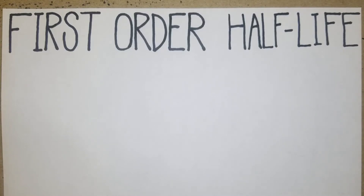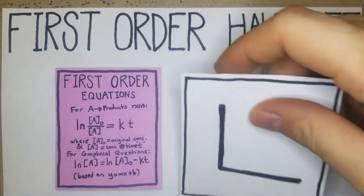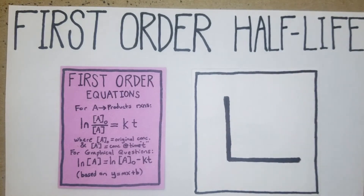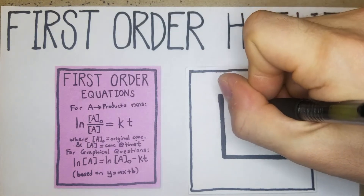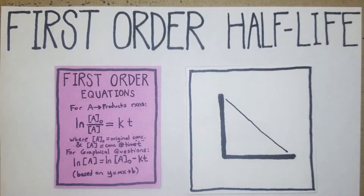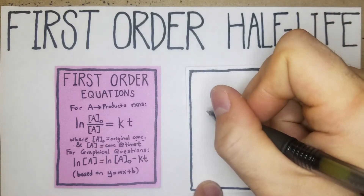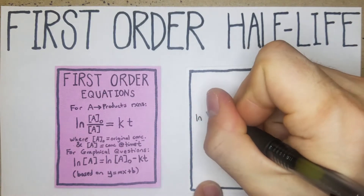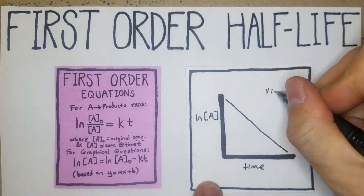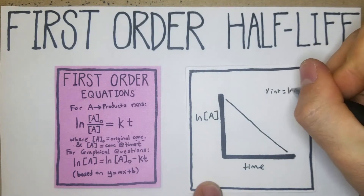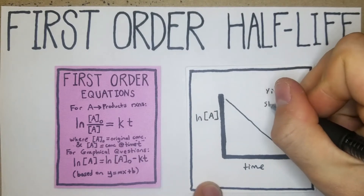In this video we're going to go over first-order half-life calculations. Just like in the previous problem, the first thing we're going to do is see what it looks like graphed. For a first-order reaction, down here you'll have time on the x-axis, and over here on the y-axis you'll have the natural log of the concentration of A. The y-intercept equals the natural log of A-naught, and the slope is negative k.